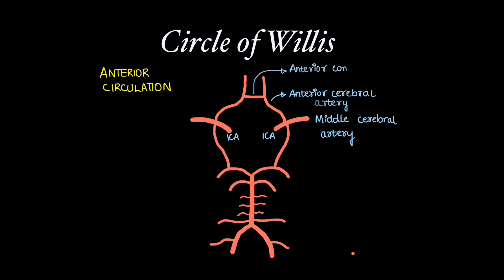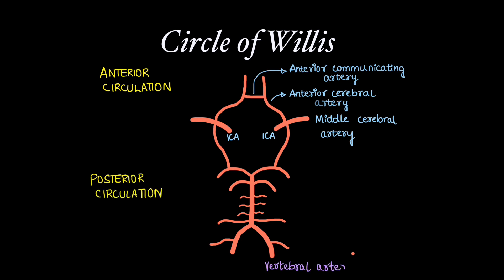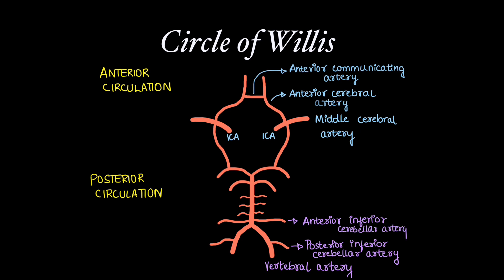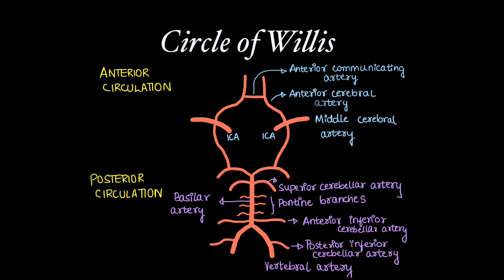Both the anterior cerebral arteries are communicated by the anterior communicating artery. The posterior circulation contains two vertebral arteries, which give rise to the posterior inferior cerebellar artery, and then the basilar artery, which gives rise to the anterior inferior cerebellar artery, the pontine branches, the superior cerebellar artery, and the terminal branches — the posterior cerebral arteries. The posterior communicating artery connects the anterior circulation with the posterior circulation.